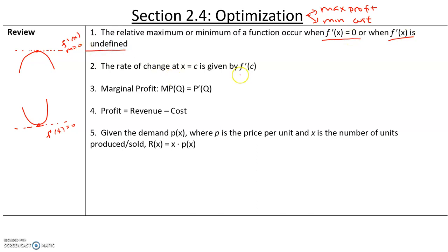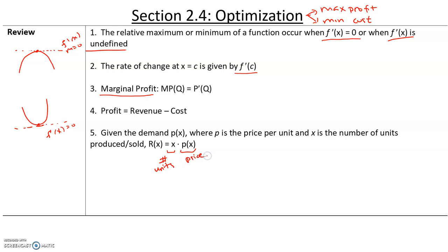The rate of change at x equals c is given by f prime of c. Marginal profit is the rate at which profit is changing — so is profit increasing or decreasing as you produce the next item. The marginal profit is given by p prime of q. Profit is revenue minus cost. And given the demand p of x, where p is the price per unit and x is the number of units sold, the revenue is equal to x times p of x. It's very important to remember what each of these variables represents: x is the number of units, and p of x is the price.